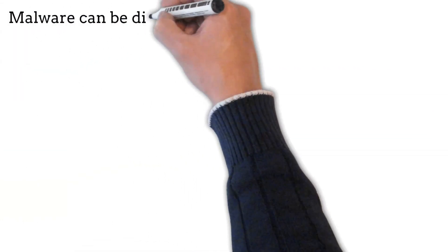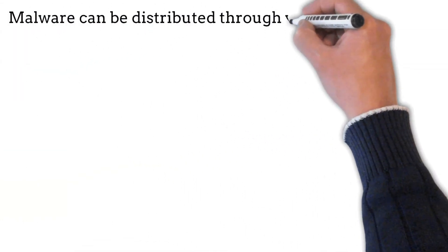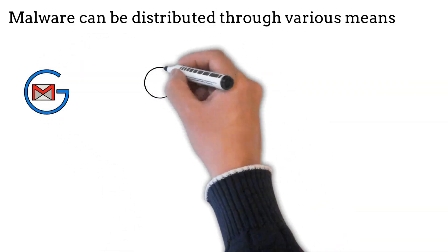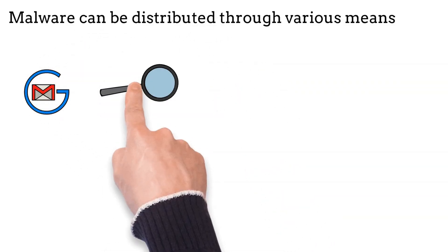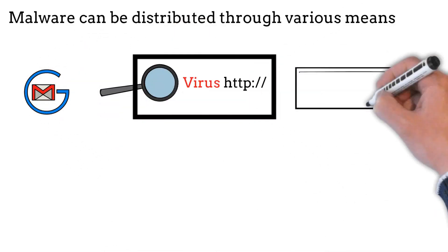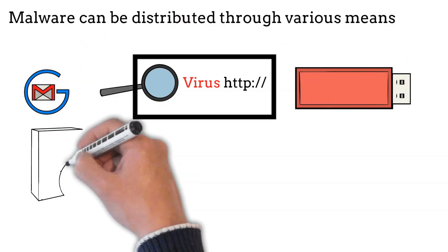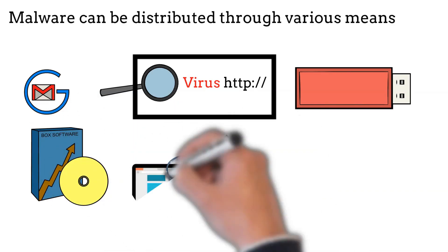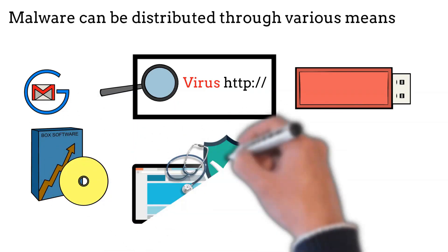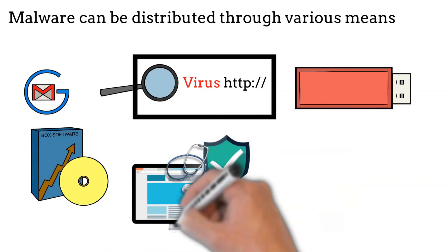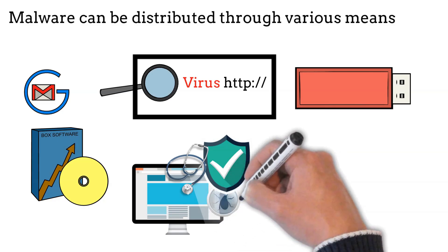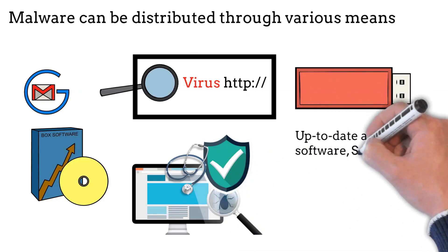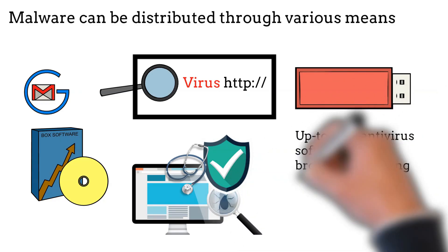Malware can be distributed through various means, including email attachments, malicious websites, infected USB drives, and compromised software downloads. Protecting against malware involves using up-to-date antivirus software, practicing safe browsing habits, and regularly updating software and operating systems.